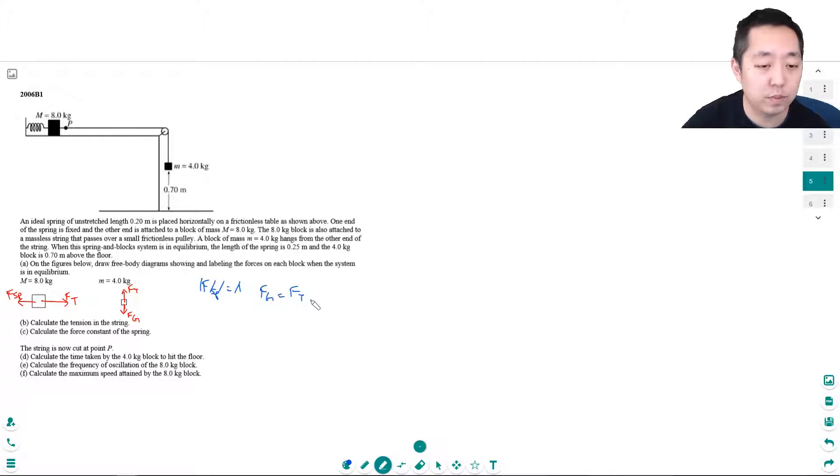fg is just mg and that's equal to 4 kilograms times 9.8 meters per second squared. That's 39.2 newtons. Okay so that's the tension.